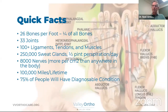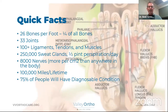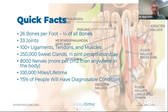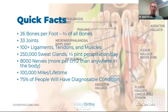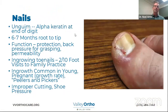Within those feet there are also 33 joints, over 100 ligaments, tendons, and muscles, tons of sweat glands, and a lot of nerve endings. The average person walks about four times around the earth in their lifetime, so feet get a tremendous amount of use. Because of that, 75% of people in the United States will have a diagnosable foot condition at some point, and many of them will seek treatment.